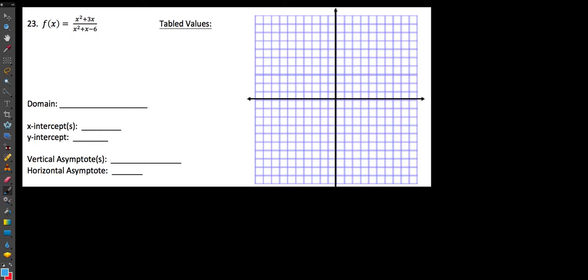One thing that I want to encourage you to do is that we always try to factor the top and the bottom if at all possible. I notice the top has a common factor of x, so if I take that out, I get x times x plus 3. On the bottom I get x times x plus 3 times x minus 2.